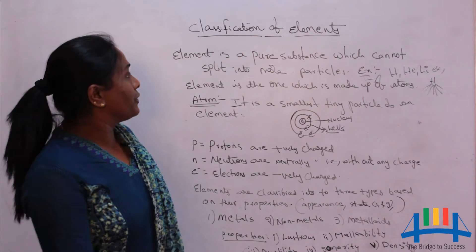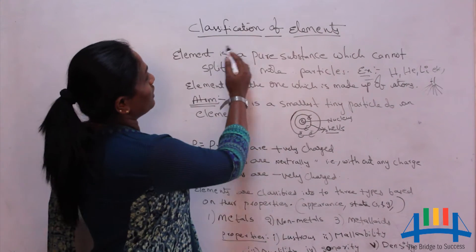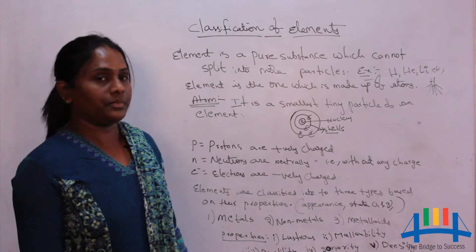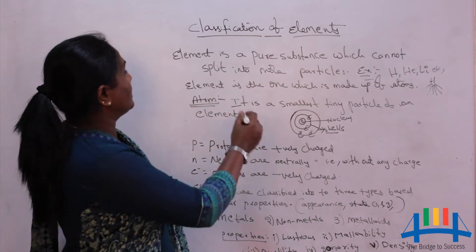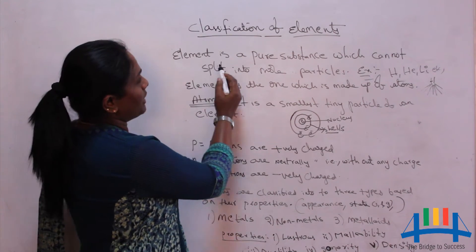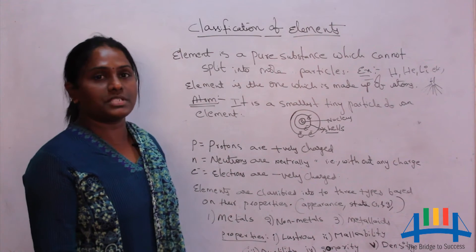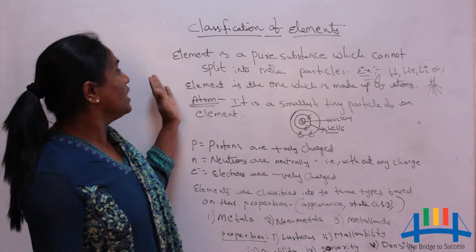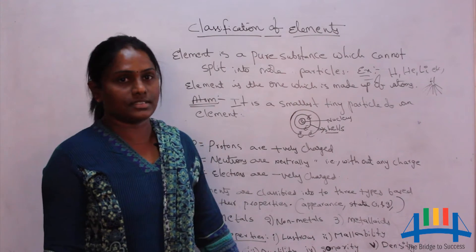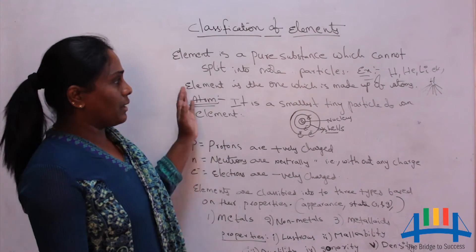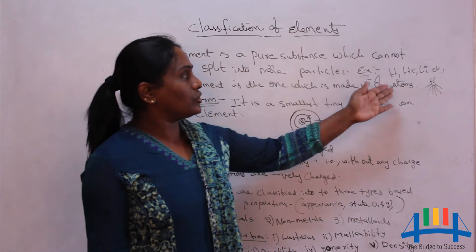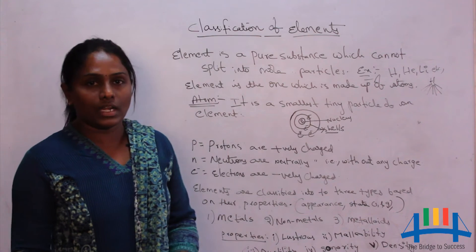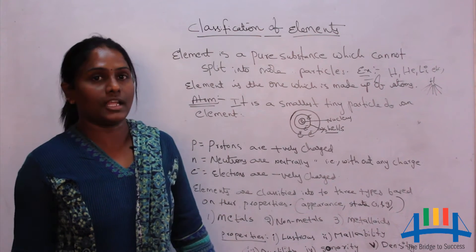Hello everyone, today we are going to learn about classification of elements. An element is a pure substance which cannot be broken or split into more particles. Examples include hydrogen, helium, lithium, and so on. We have 116 elements in total.